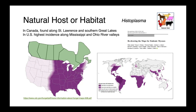In North America, Histoplasma capsulatum is found on the eastern half of the continent. Its highest incidence in the United States is along the Mississippi and Ohio River Valleys, and in Canada it's found along the southern Great Lakes and St. Lawrence Seaway. Globally, we find Histoplasma throughout Mexico, Central and South America, as well as many parts of Africa, Asia, Australia, and even foci in Europe.